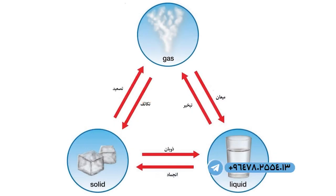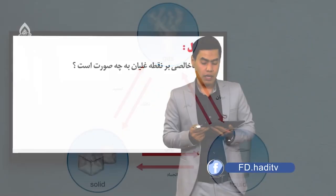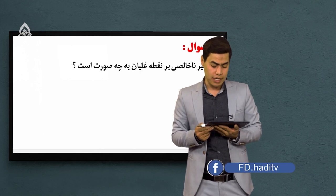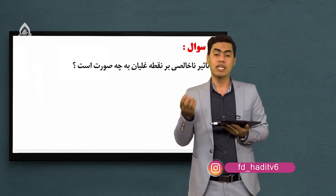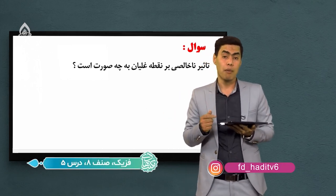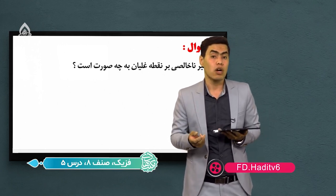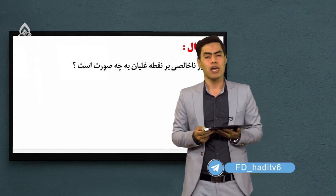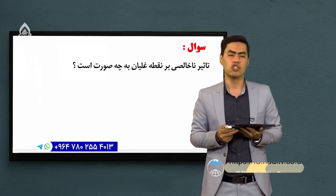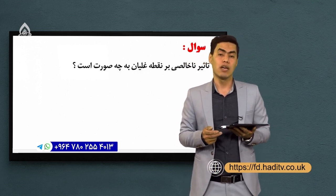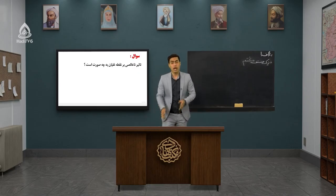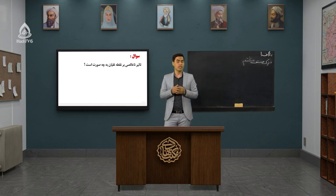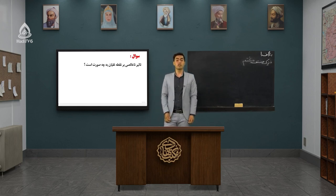به عنوان یک کار خانگی، یک سوال برای شما در نظر گرفتیم: ناخالصی بر نقطه غلیان چه تأثیری داره؟ ما نقطه انجماد و نقطه ذوب رو بررسی کردیم، حالا شما این سوال رو برای ما جواب بدید و جواب سوال رو برای ما روان کنید. شاگردان عزیز، فصل اول ما خلاص شد. تا جلسه بعد که وارد فصل دوم می‌شیم، همه شما عزیزان را به الله پاک می‌سپاریم. محفوظ و پیروز و سربلند باشید.